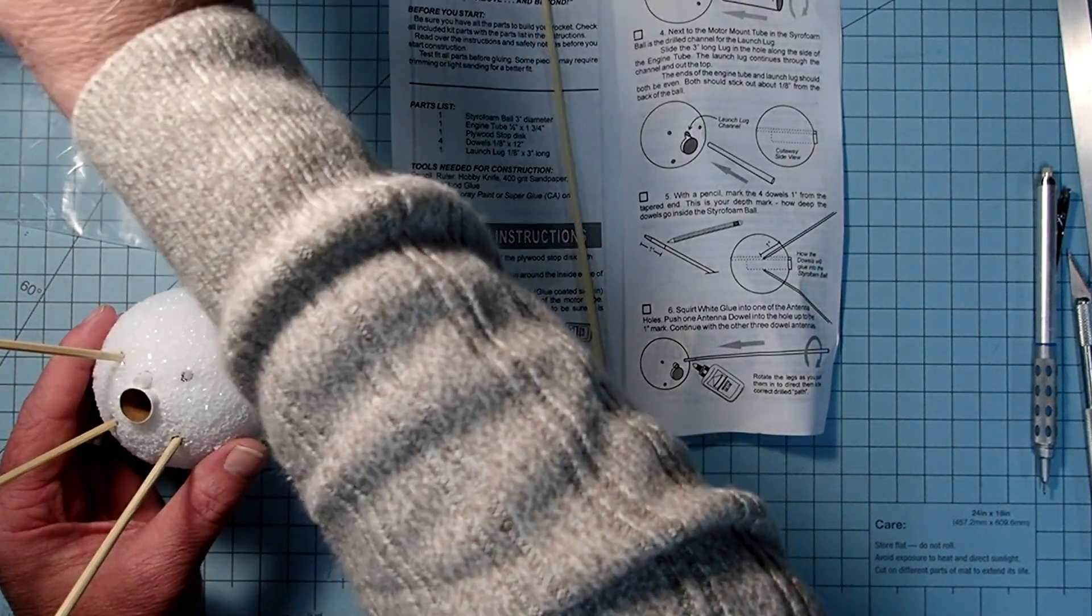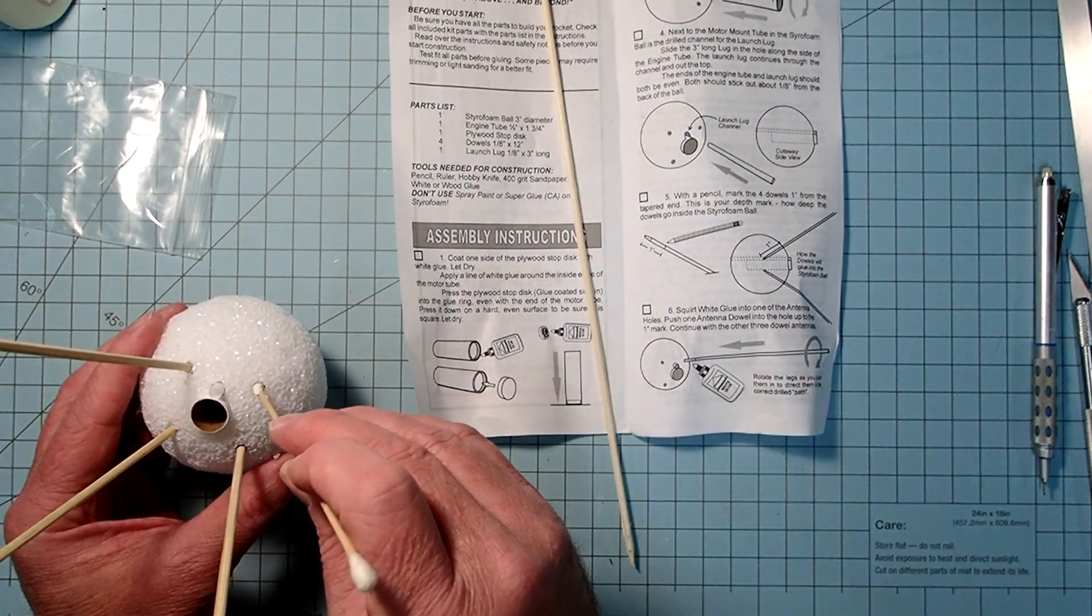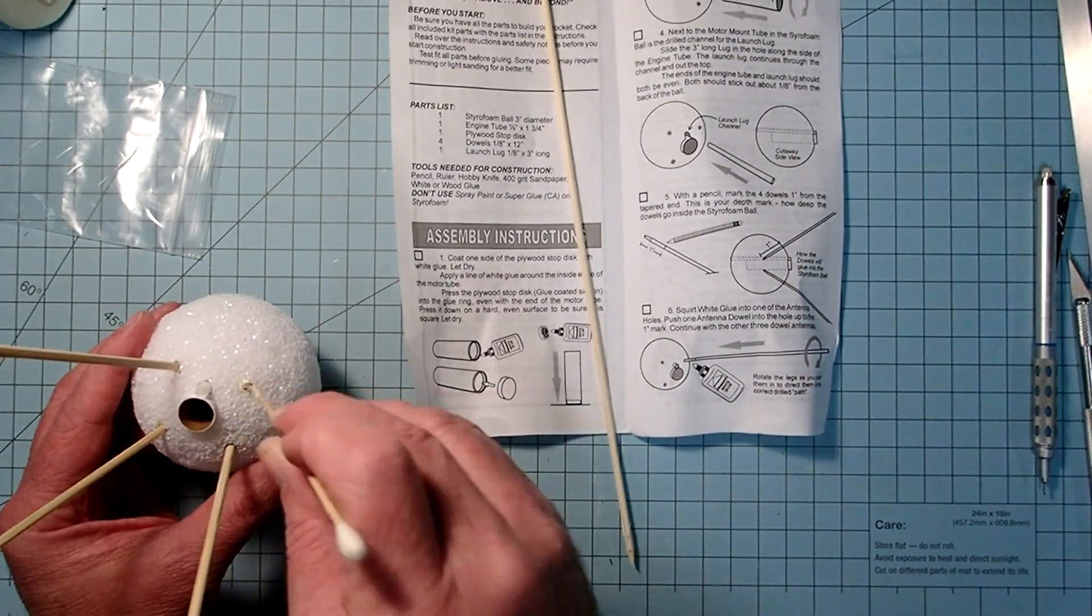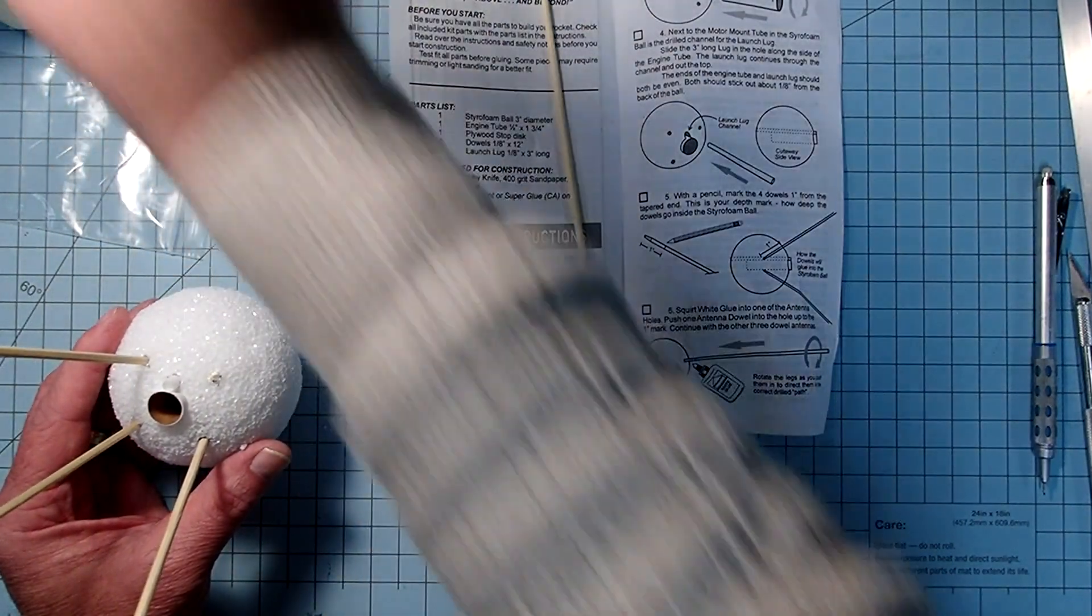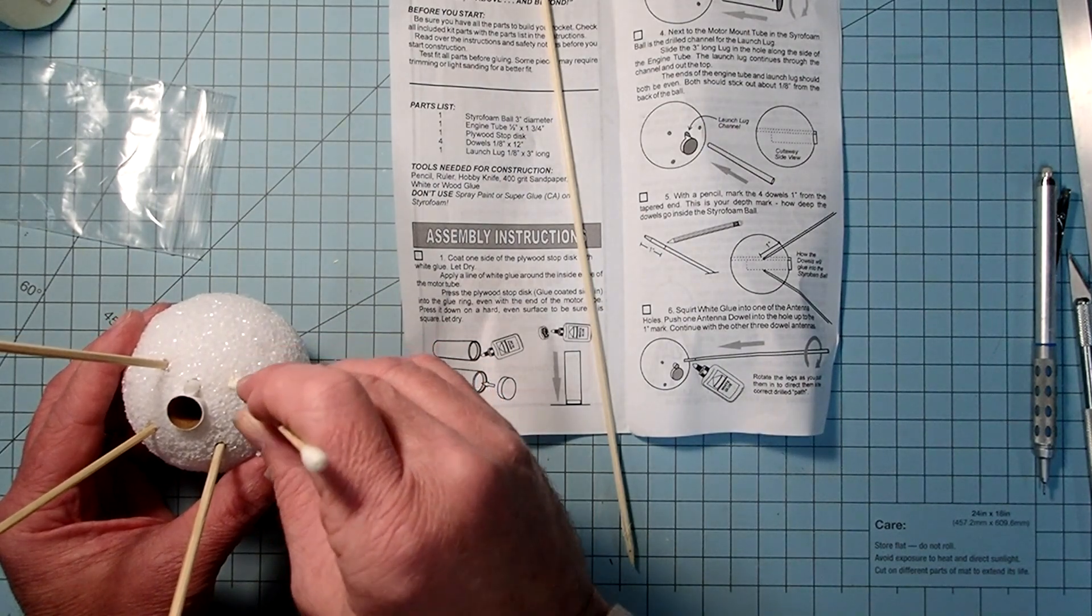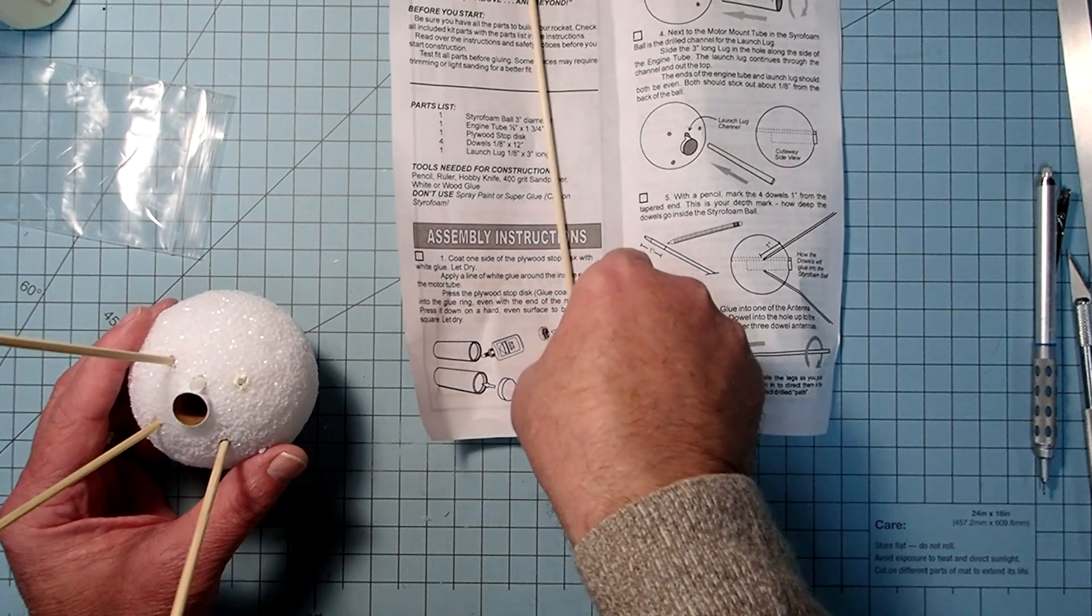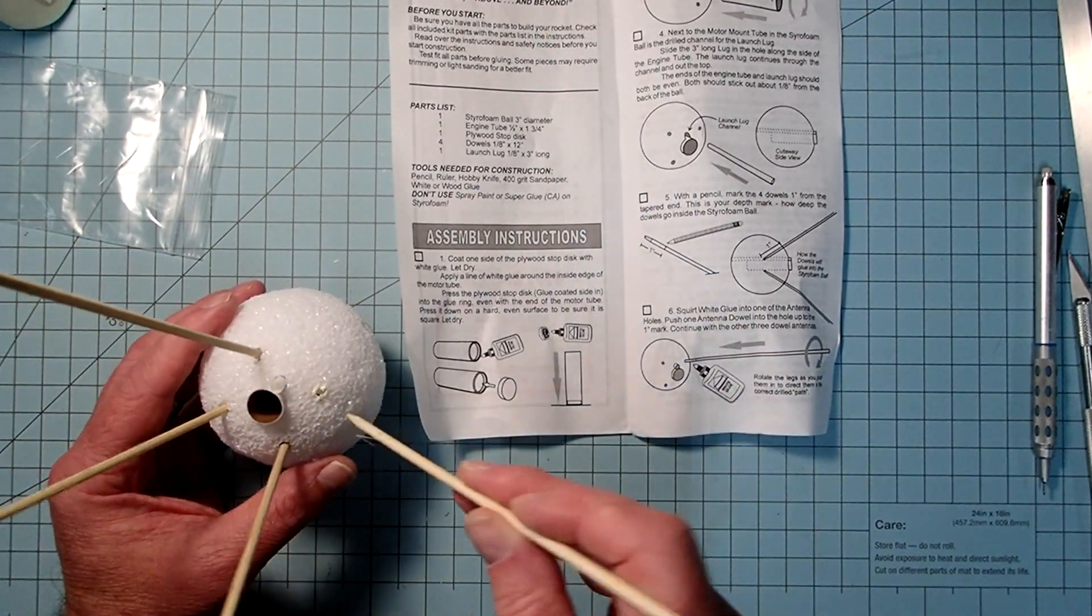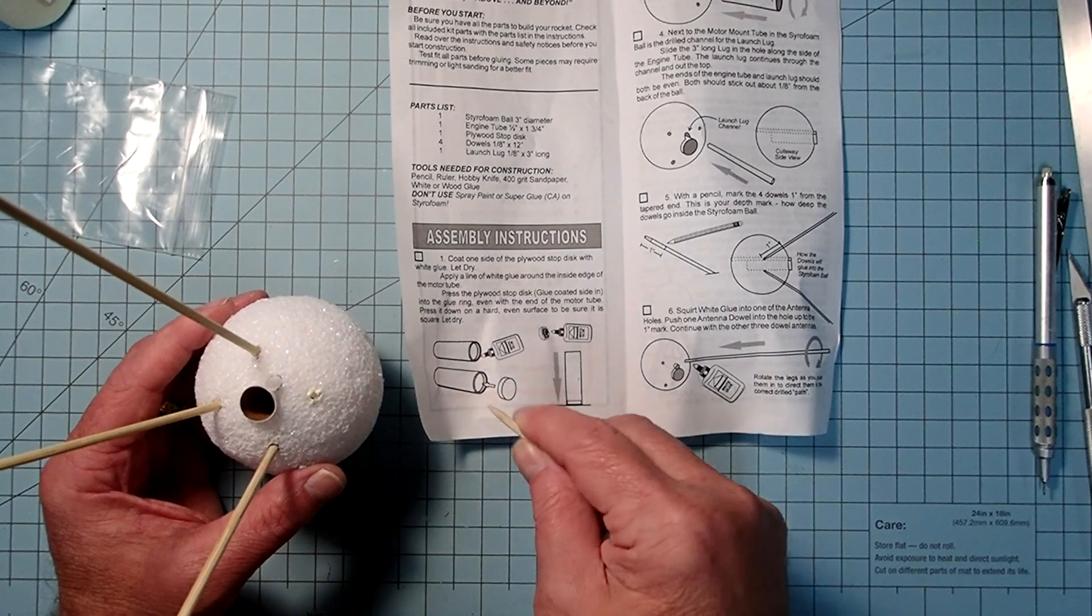And my white glue and my wood glue don't have the nice little squirty parts. So I'm just going to apply some down in here. And one of the key things here is you don't want to use anything other than white or wood glue because plastic cements and super glues and things like that will melt the styrofoam. And we don't want melted styrofoam.